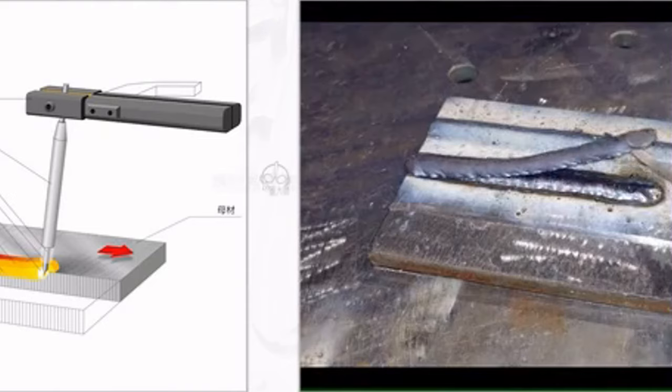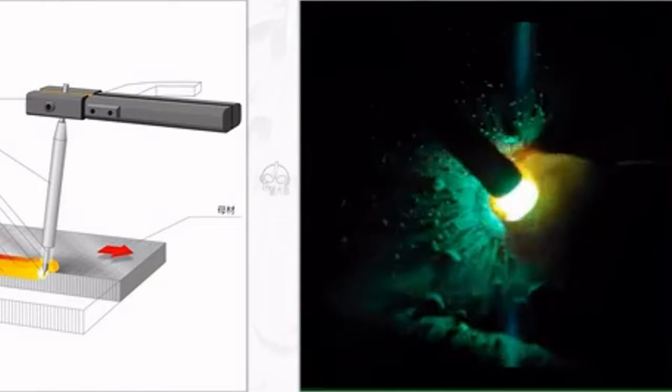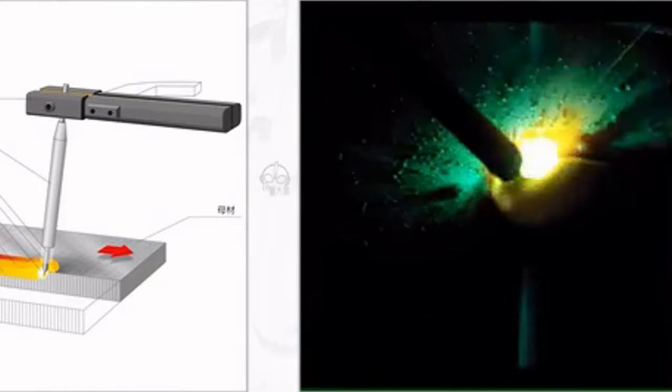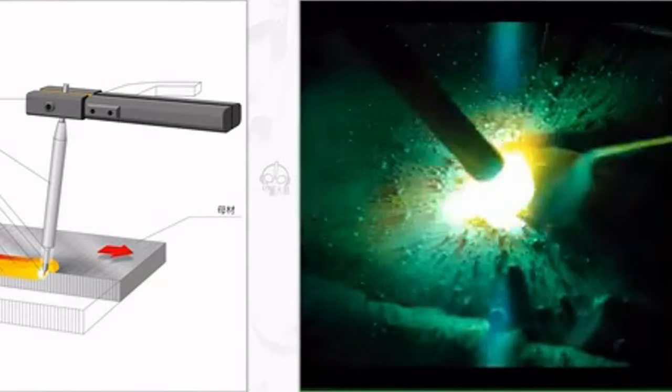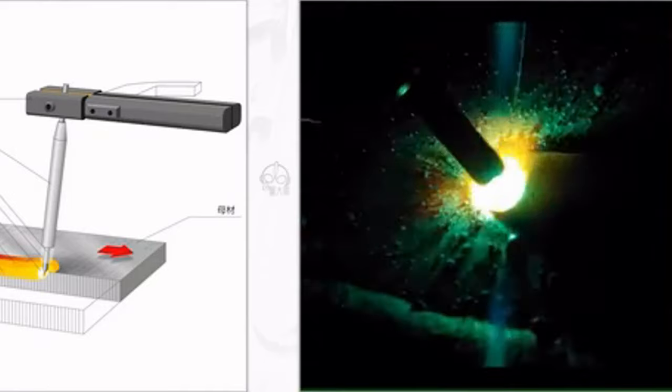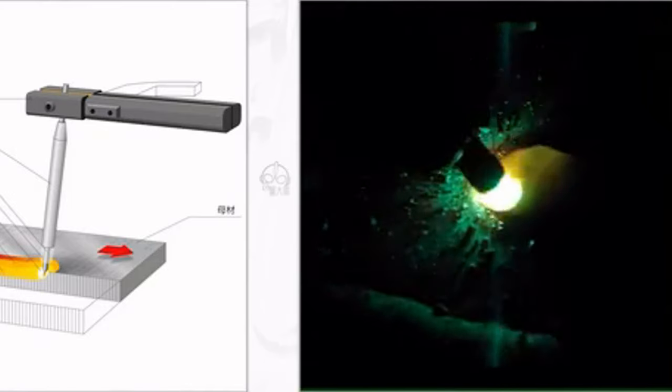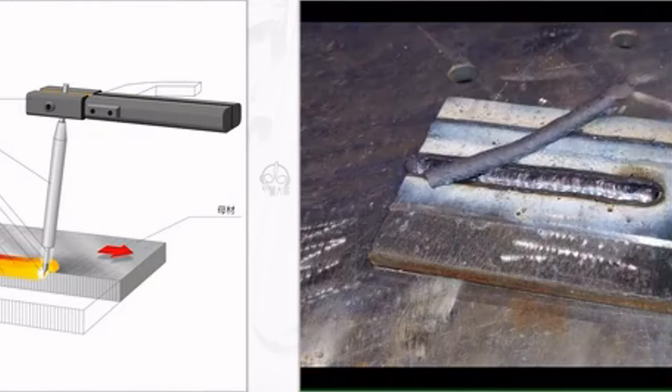During the fusion welding process, if the atmosphere directly contacts the high-temperature weld pool, oxygen in the air will oxidize the metal, and nitrogen and water vapor will enter the weld pool, forming defects like pores, slag inclusions, and cracks. Therefore, shielding gas is needed to isolate the air. In manual arc welding, the coating on the welding rod decomposes to produce shielding gas and slag, isolating the atmosphere.